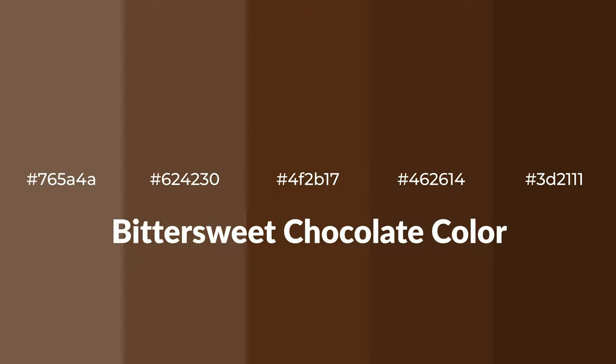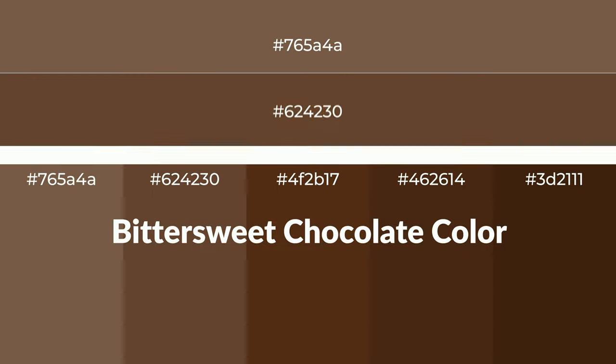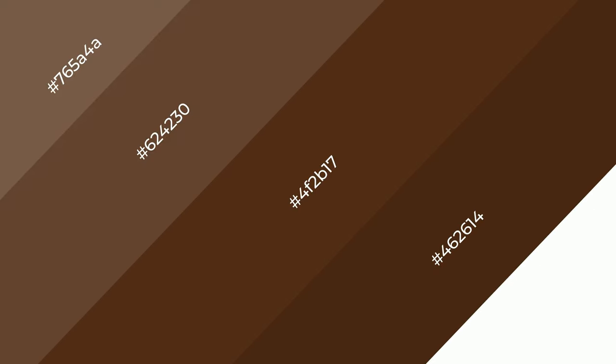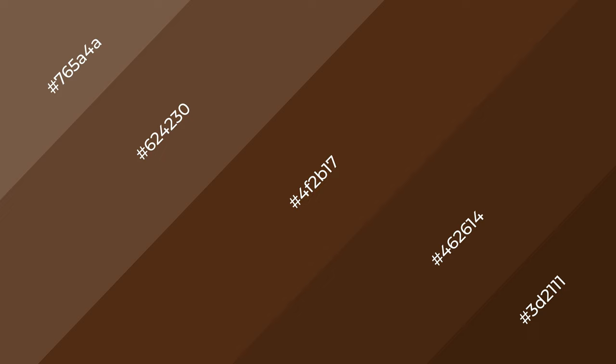Warm shades of bittersweet chocolate color with a brown hue for your next project. To generate tints of a color, we add white to the color — tints create light and exquisite emotions. To generate shades of a color, we add black to the color, and it is used in patterns, 3D effects, and layers. Shades create depth and drama.